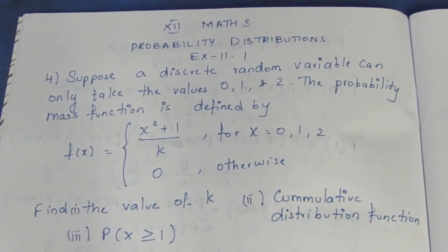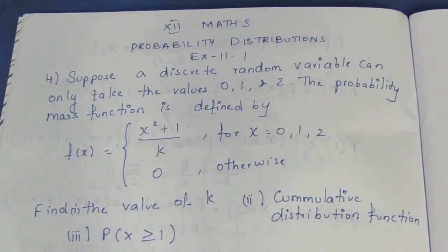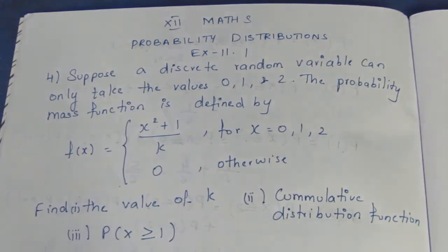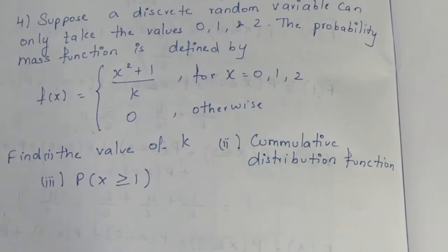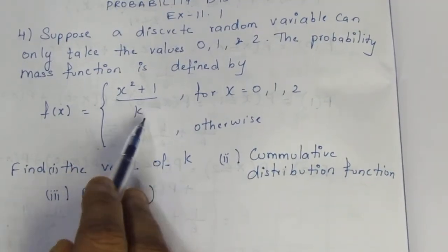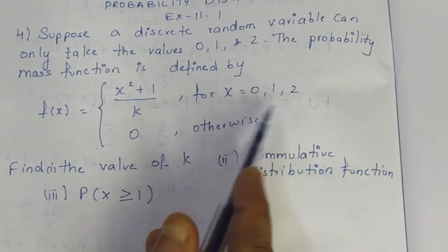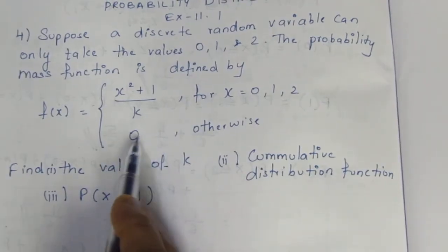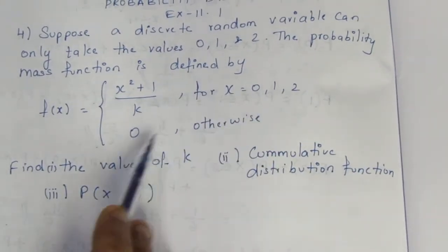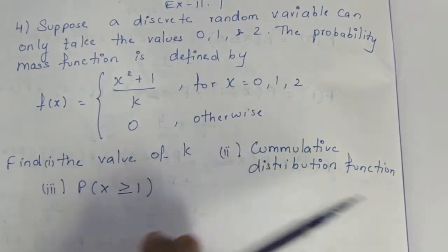The question is: suppose a discrete random variable can only take the values 0, 1, and 2, and the probability mass function is defined by f(x) = (x² + 1) / k for x = 0, 1, 2, and 0 otherwise.